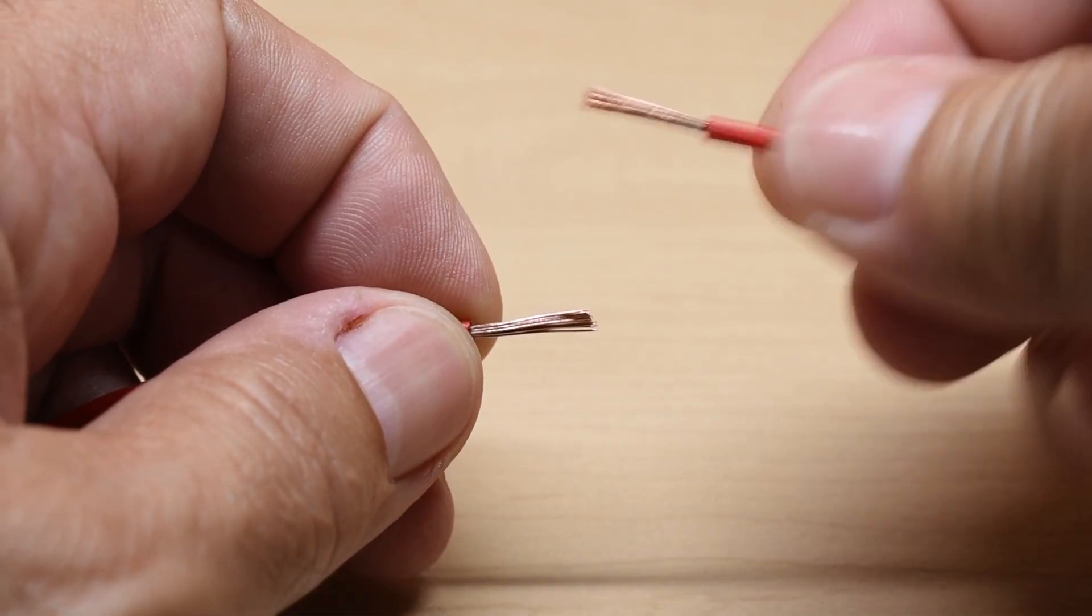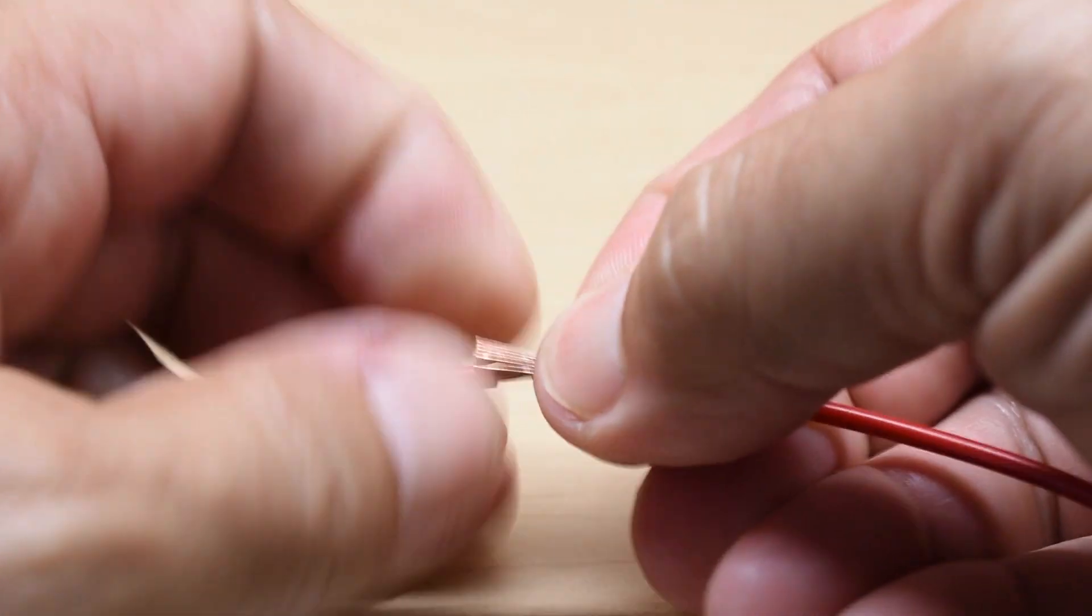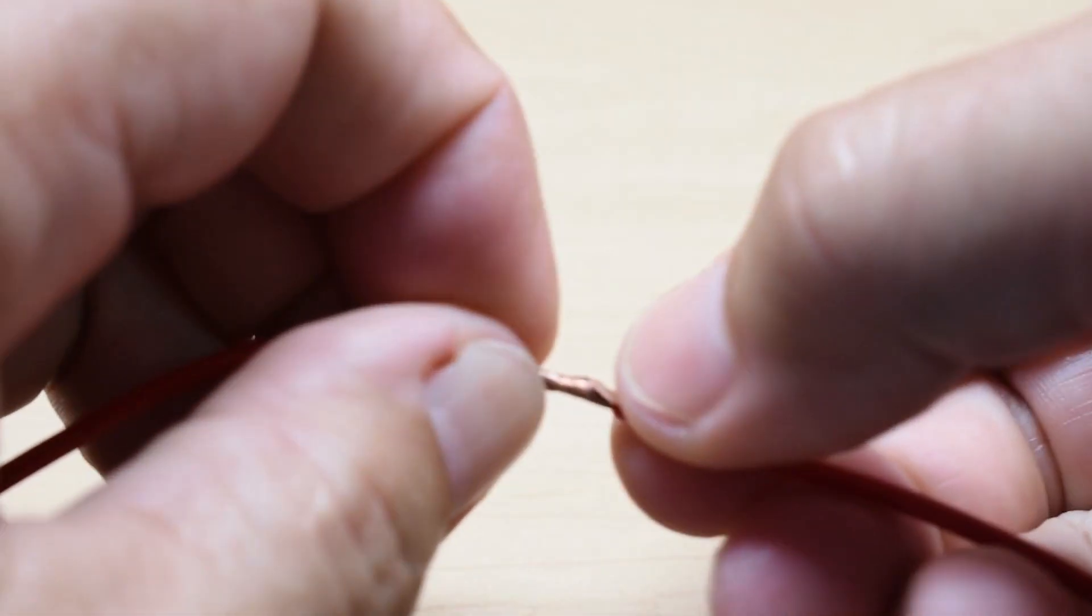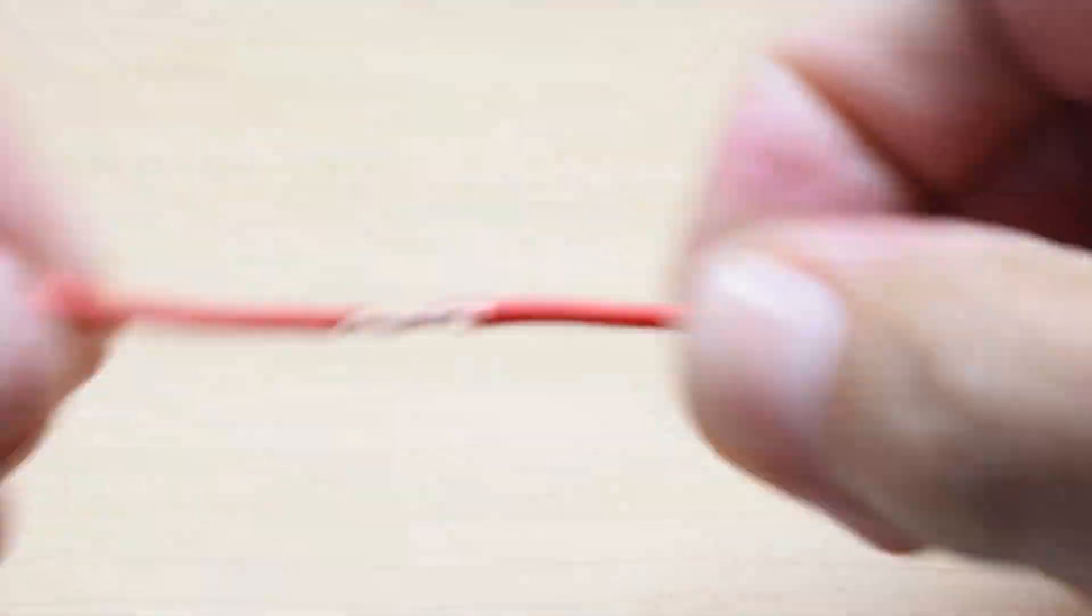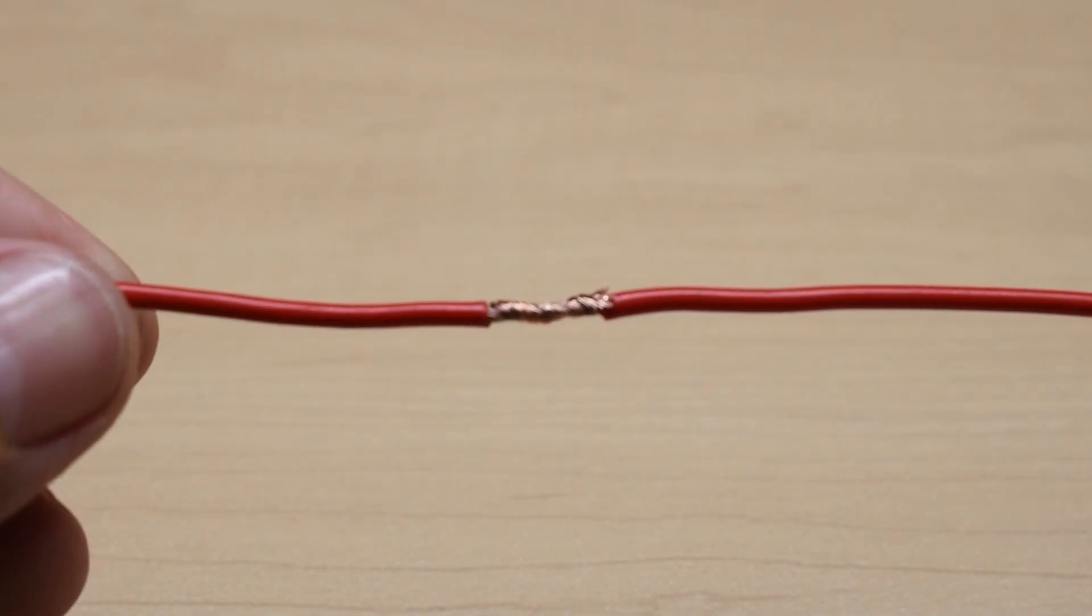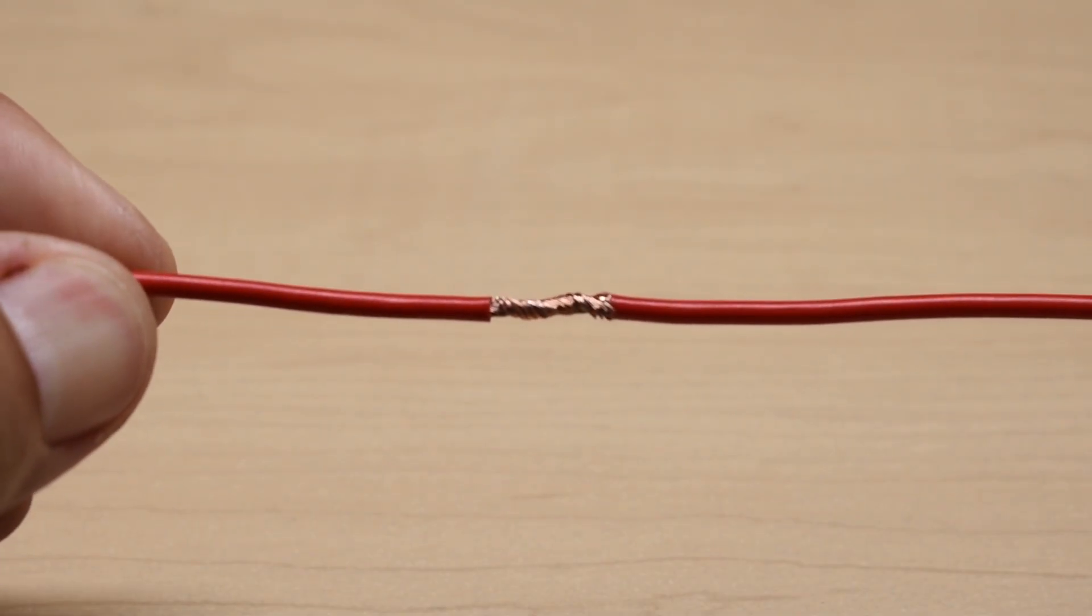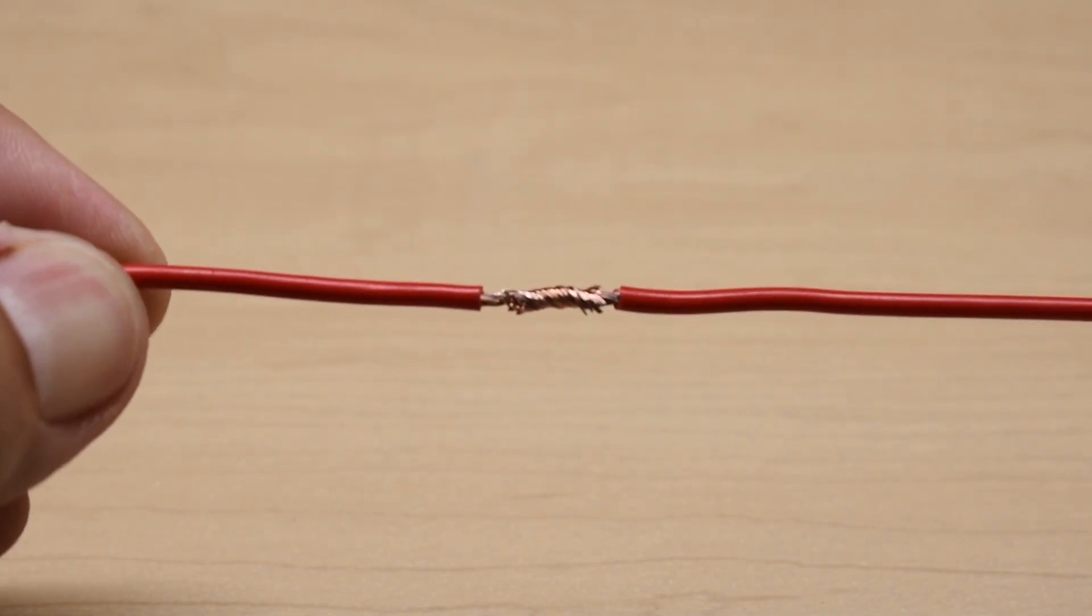You're going to take the two wires, go like that, and then you're going to twist them together. Make a nice tight wrap. And right there, you can see we have a strong mechanical connection.